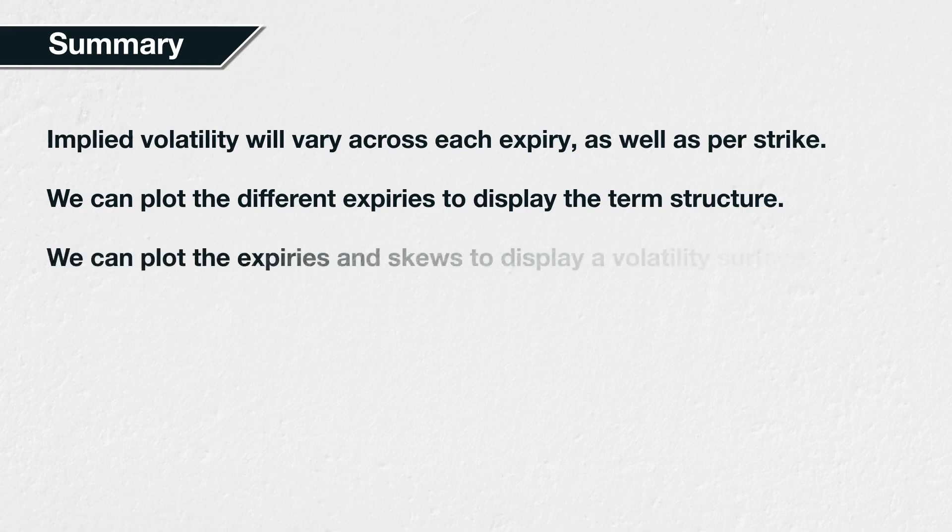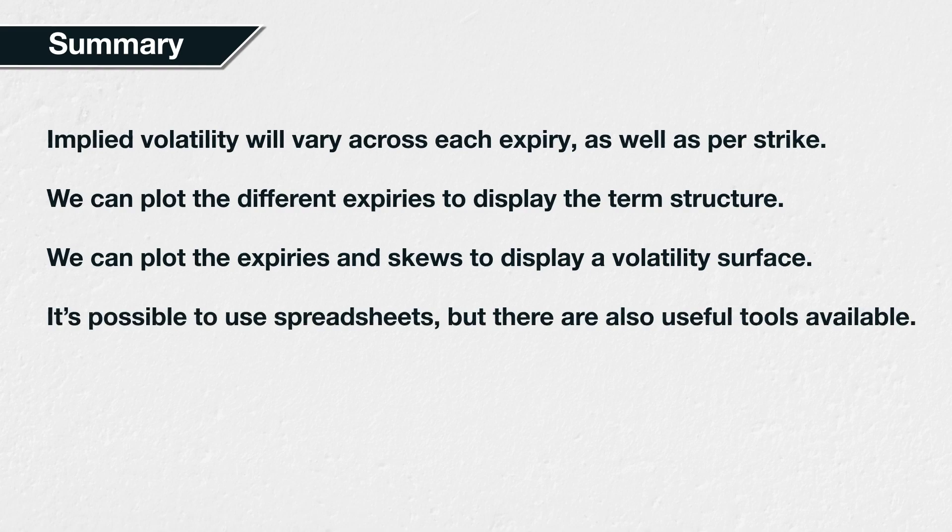If we combine this with the data for the other options in each expiry as well, we get a volatility surface. This gives us a more detailed, and of course more complicated, view of implied volatility. It is possible to create both term structures and volatility surfaces in spreadsheets, though there are useful tools available to do this work for you.